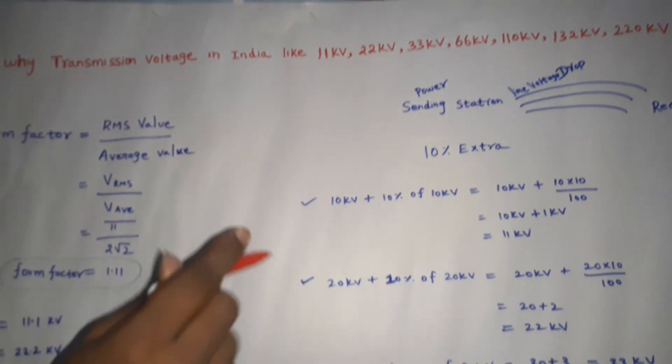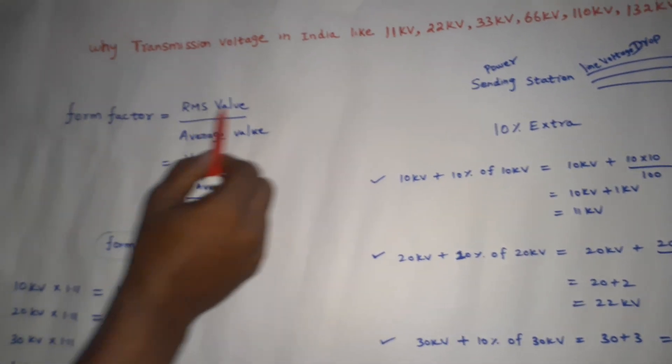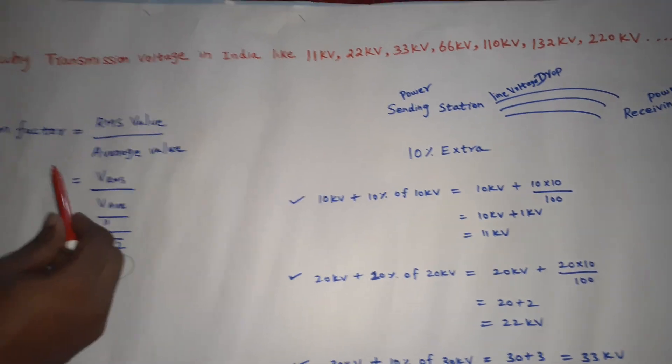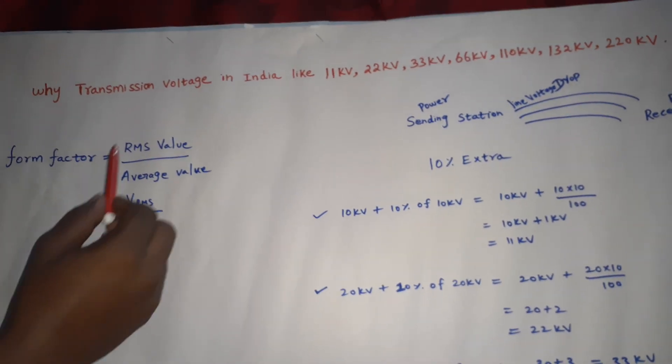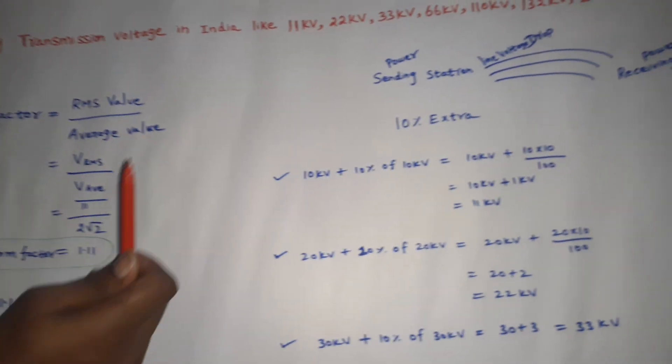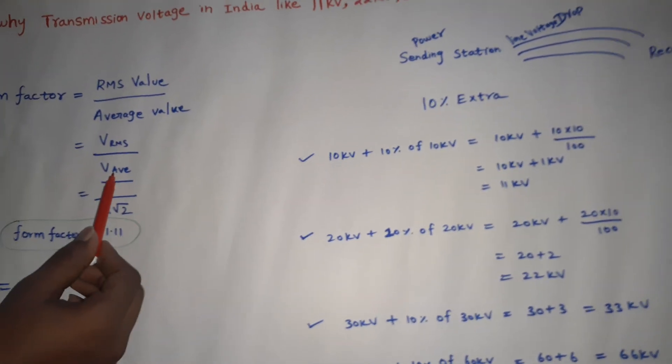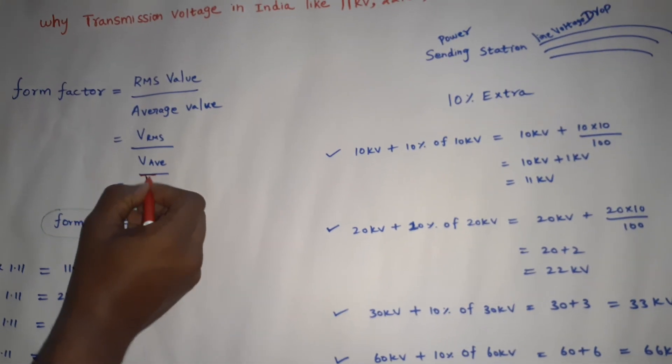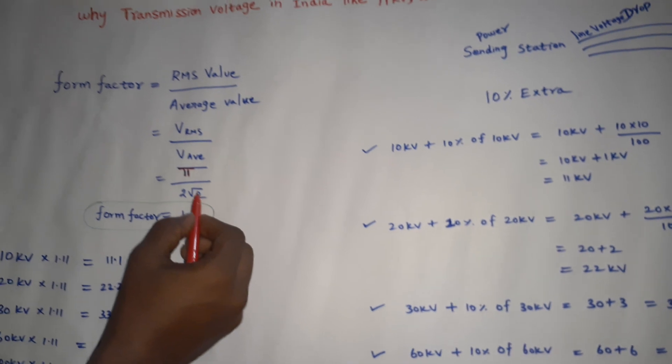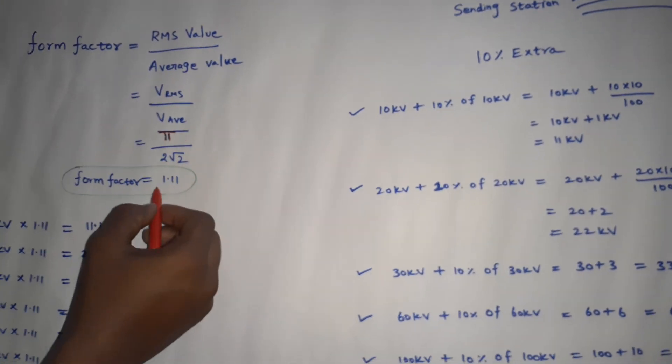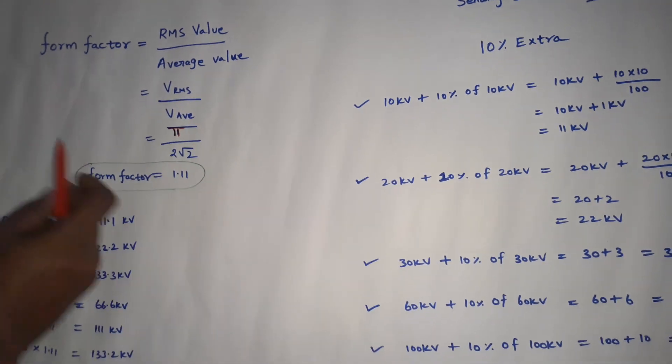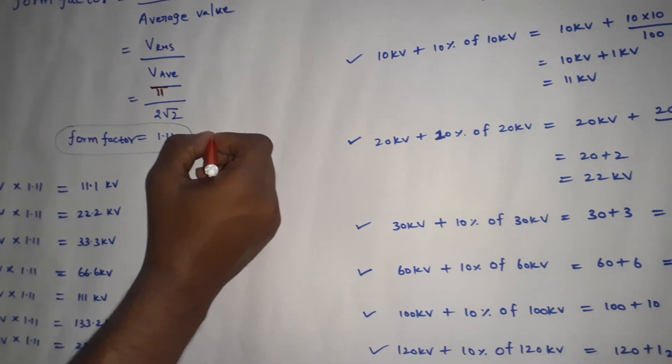People ask that form factor is 1.11. Form factor is nothing but ratio of RMS value to the average value. So, Vrms divided by Vaverage. Form factor is purely sinusoidal wave, or sine wave.